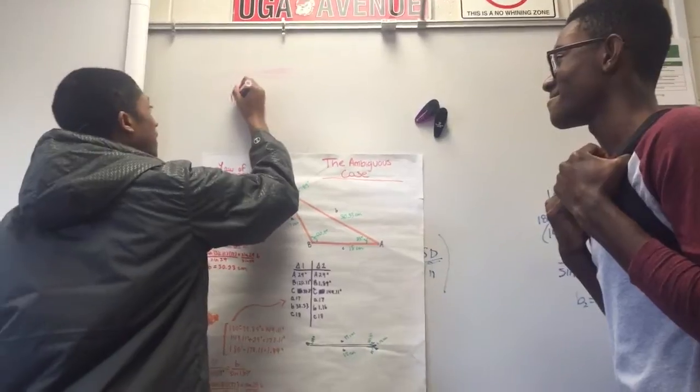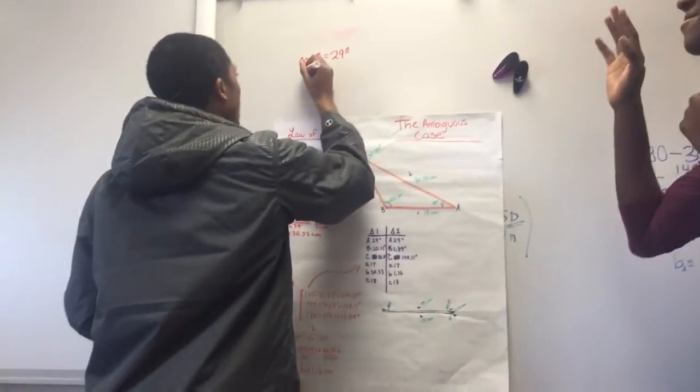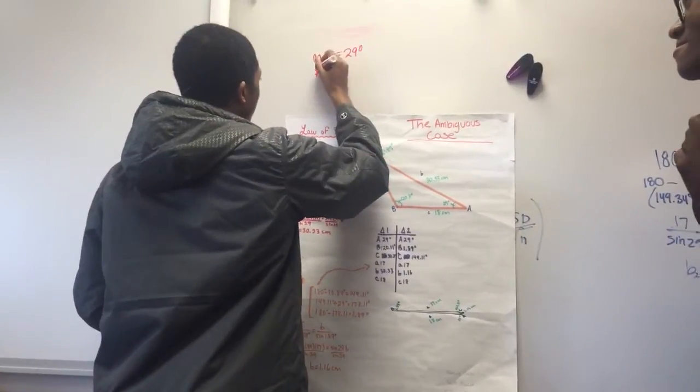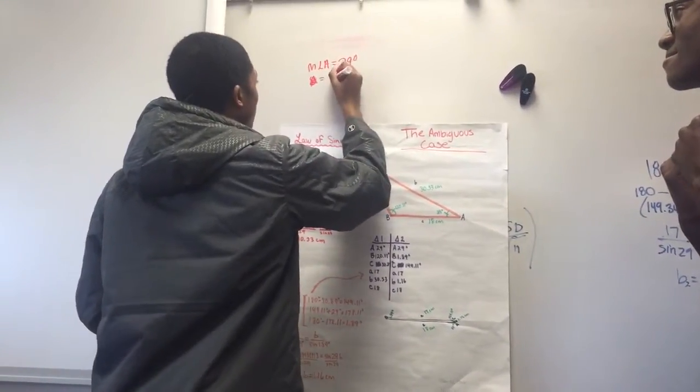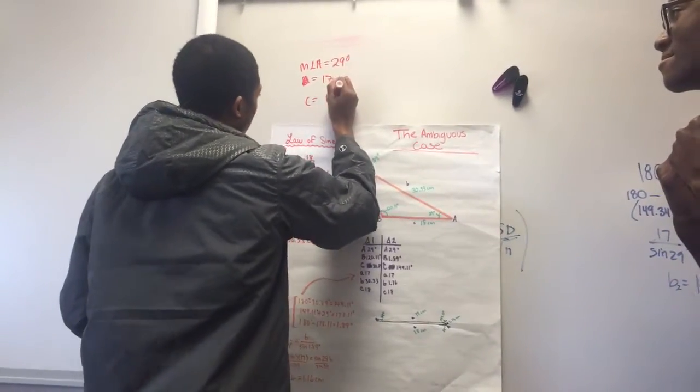Let's say you're giving angle A, which is 29 degrees, side A, which is 17 centimeters, and side C, which is 18 centimeters.